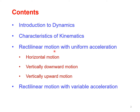Rectilinear motion is nothing but the motion of a particle along a straight line. We have two cases: rectilinear motion with uniform acceleration and rectilinear motion with variable acceleration. In rectilinear motion with uniform acceleration, we are going to see three different cases — the particle moving in the horizontal direction, moving vertically downwards, and moving vertically upward.